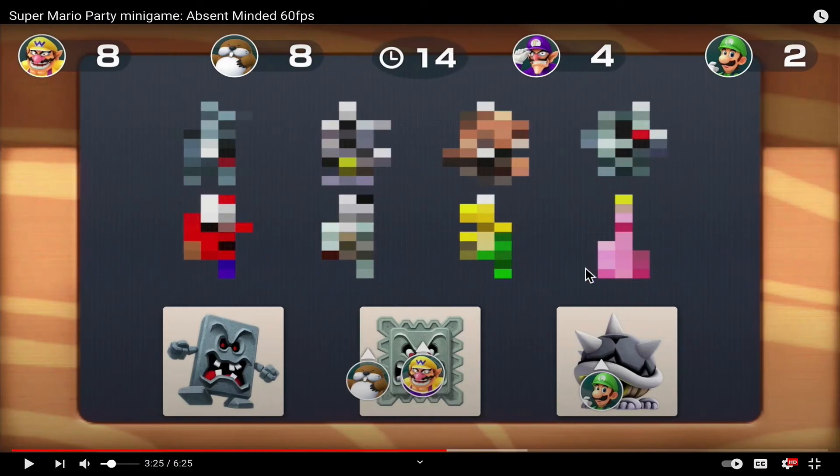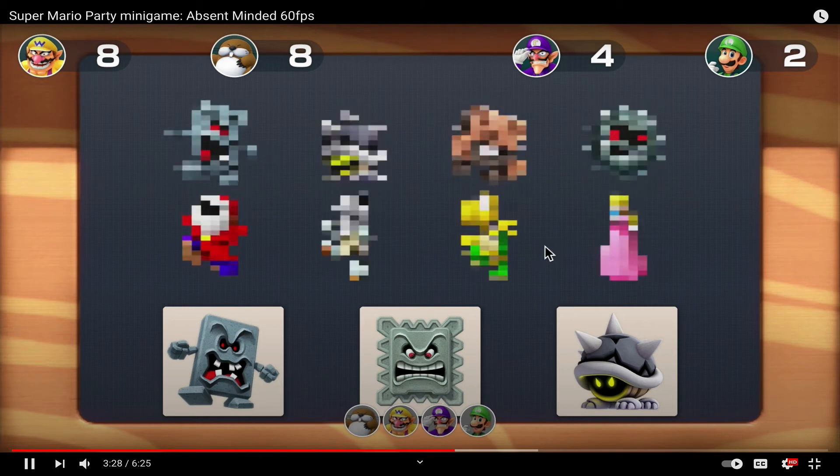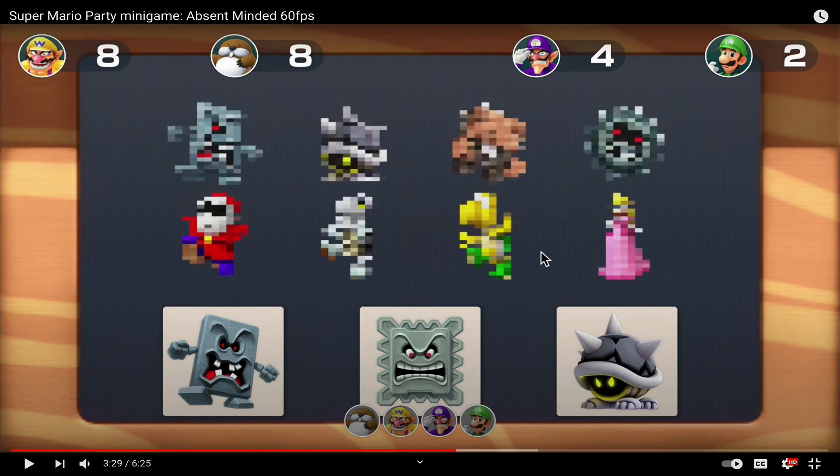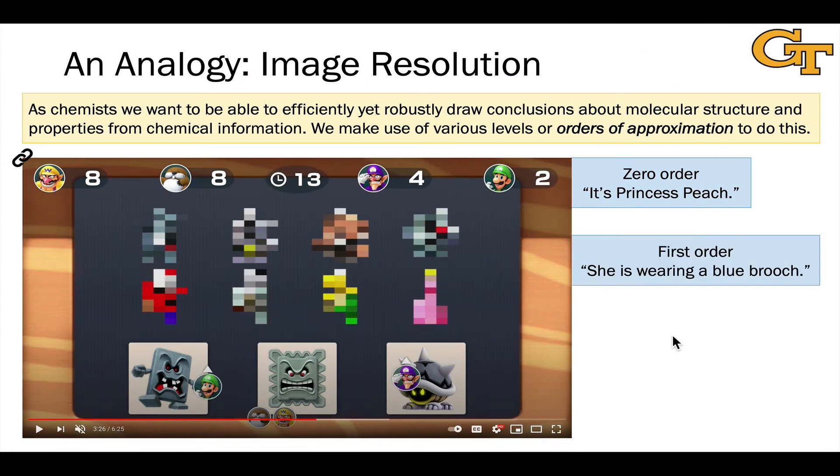Let's watch the mini game proceed and see what happens as the resolution increases. Now we've moved to a profoundly higher resolution with more pixels in the image and now we can draw additional conclusions. For example I'm seeing a blue dot near the center of the image, maybe that allows me to draw the conclusion to first order that she's wearing a blue brooch at the center of her dress. And that's consistent with my prior knowledge of the Mario universe, that's typical for Princess Peach's outfit.